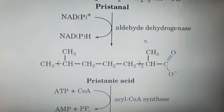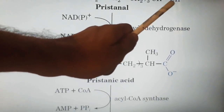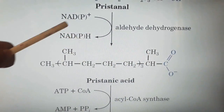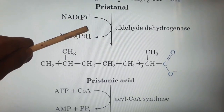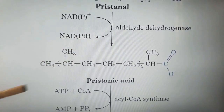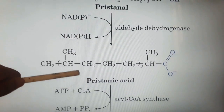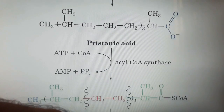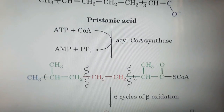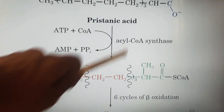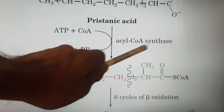In the next step, pristanal is again oxidized — the terminal carbon is oxidized to a carboxylic acid — by an enzyme known as aldehyde dehydrogenase, in which NAD⁺ (or NADP⁺) is converted into NADH (or NADPH). This oxidized product is known as pristanic acid.